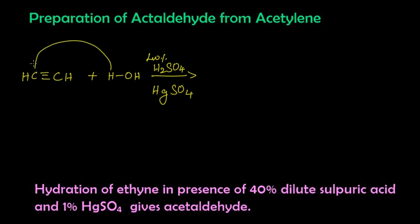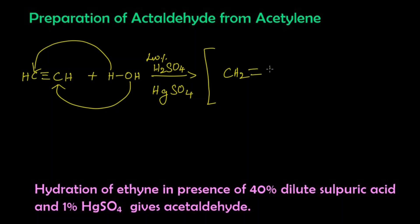What happens is: this hydrogen gets attached to one carbon and this OH gets attached to the other carbon, so we get an intermediate compound CH₂ double bond CHOH. This is called enol.